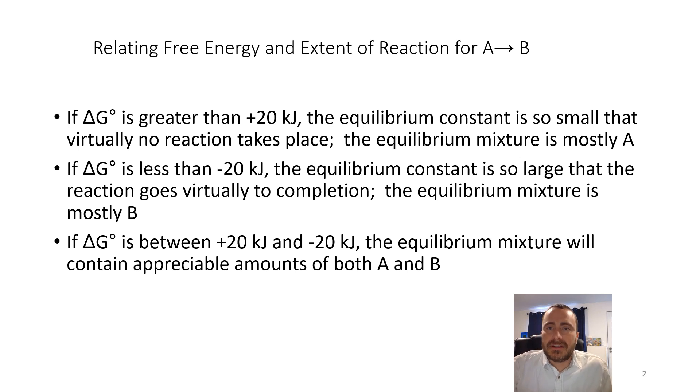If our delta G is less than negative 20 kilojoules - when we have a negative delta G, that's a spontaneous reaction. When we have a relatively more negative delta G, more negative than negative 20, that means that it's big enough, or negative enough, that we're going to drive the reaction to mostly be products. We're going to have that being pretty spontaneous. Once we reach equilibria, there's going to be a lot of B and probably not much of the A or reactant remaining.